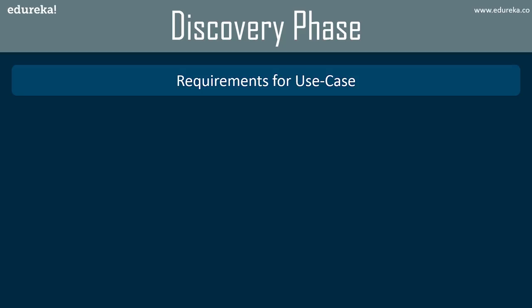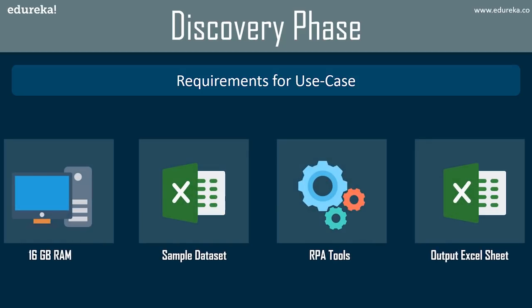For our use case, the scenario can definitely be automated. The requirements are basically: a system with 16 GB RAM, a sample dataset from which data has to be extracted, an output sheet where we'll store the extracted data, and finally a tool to automate the task. According to your task or client requirements, you will have a specific set of requirements for each task to be automated.